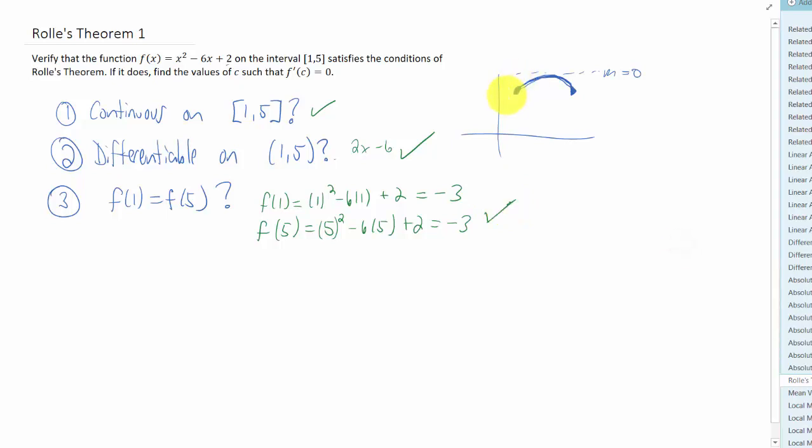Now, of course, that means that between these two x values that are given, there must be a horizontal tangent line. Let's find the value of x where that happens. So we need to take a derivative. We know that that's 2x minus six, and we're going to set that derivative equal to zero because we said horizontal tangent line. That means the slope of that tangent line is going to be zero. And we can see that solving for x, we're going to add six and divide by two. We get x is three.